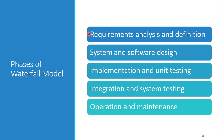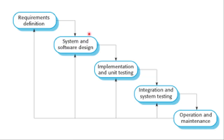To summarize the waterfall model phases: requirement analysis and definition, system and software design, implementation and unit testing, integration and system testing, and operation and maintenance. These are the five phases we have discussed.